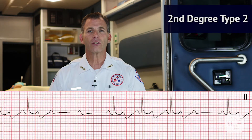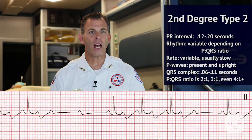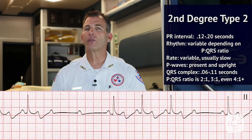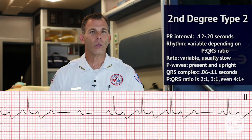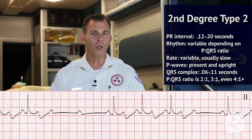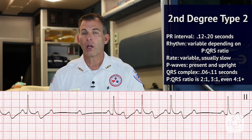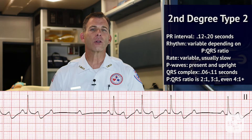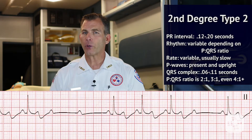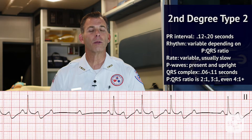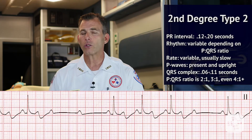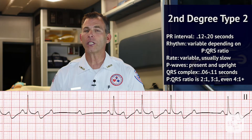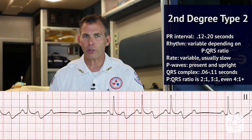In the case of the type 2 heart block, the rhythm is variable depending on the P to QRS ratio. The rate is variable but will usually be slow. While P waves are present and upright, the P to R interval will be between .12 and .20 seconds of the normally conducted complexes.